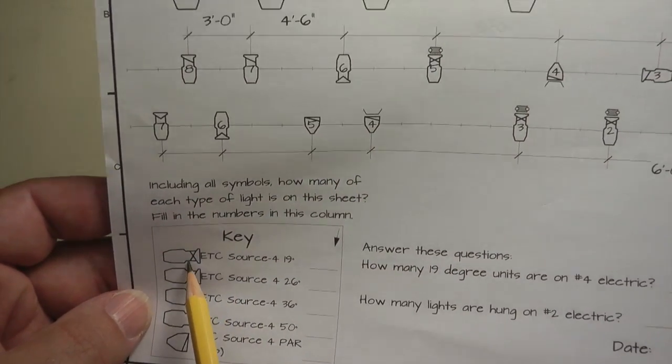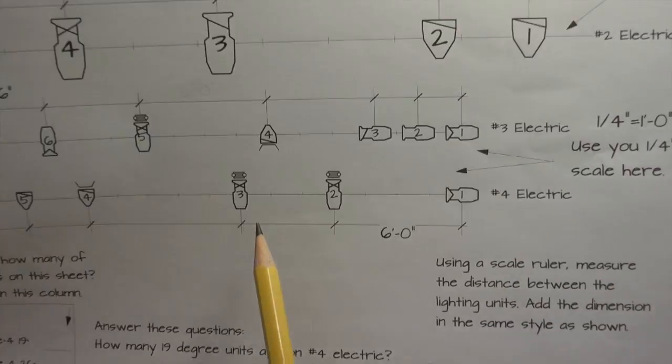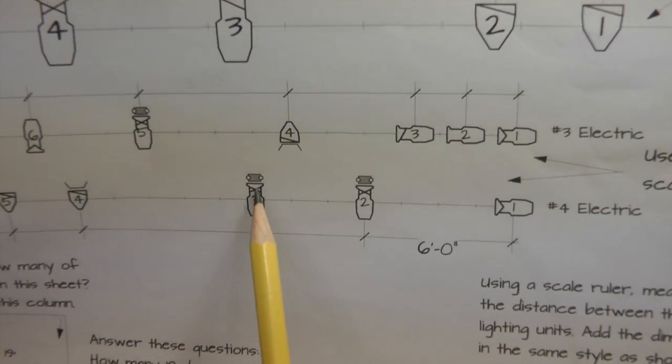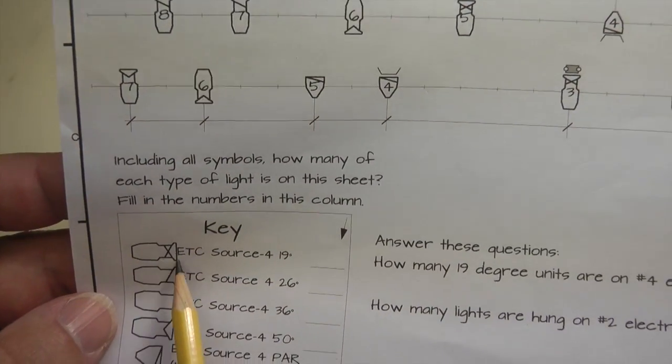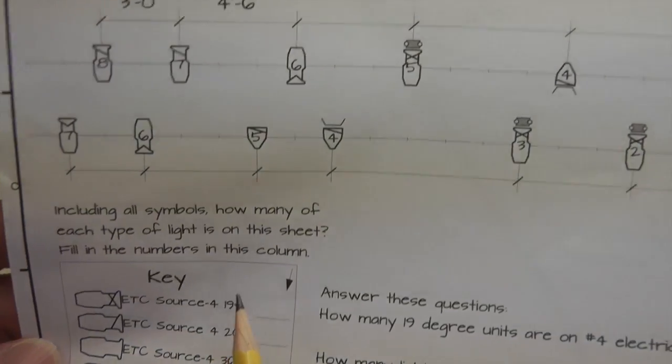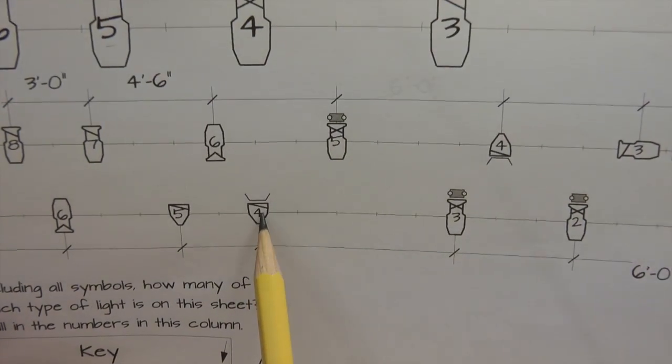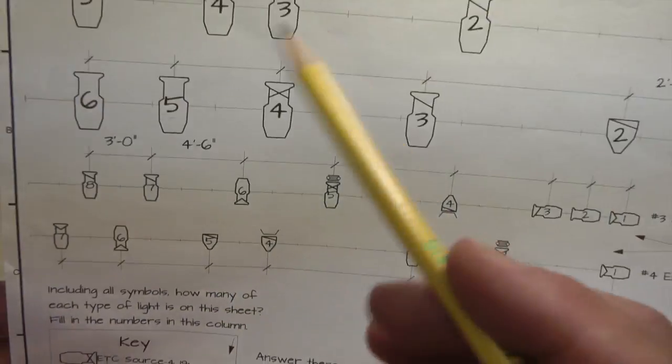We have a key here. And these symbols tell us what all these symbols mean here. So we have here a lighting unit with an X in it. Over here we have an X. That stands for a 19-degree unit. This is a par symbol. This is what tells us that it's a par, and so on.